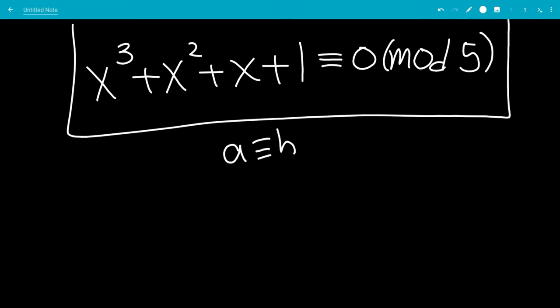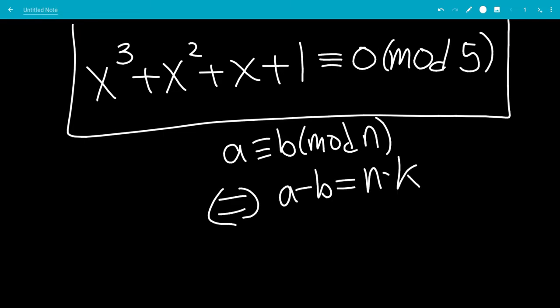Okay, so a is congruent to b mod n means that it's equivalent to a minus b equals a multiple of n, so n times k, where a, b, n, and k are integers.